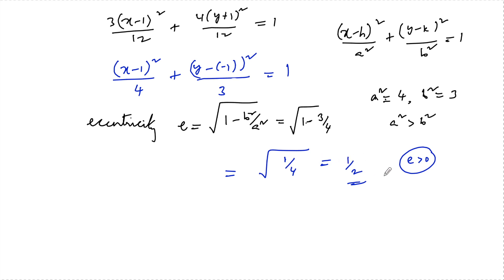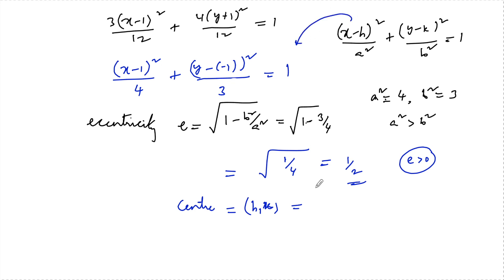The center of an ellipse is (h, k). Comparing with our equation, h = 1 and k = -1. So the center of the ellipse is (1, -1) and the eccentricity is 1/2.